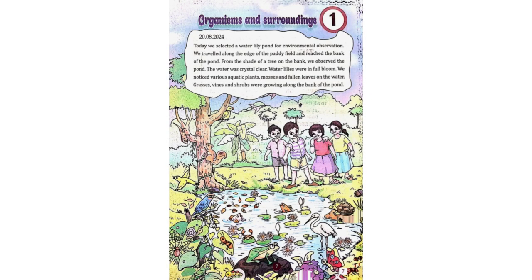Today we selected a water lily pond for environmental observation. We travelled along the edge of the paddy field and reached the bank of the pond. From the shade of a tree on the bank, we observed the pond. The water was crystal clear. Water lilies were in full bloom. We noticed various aquatic plants, mosses, and fallen leaves on the water.